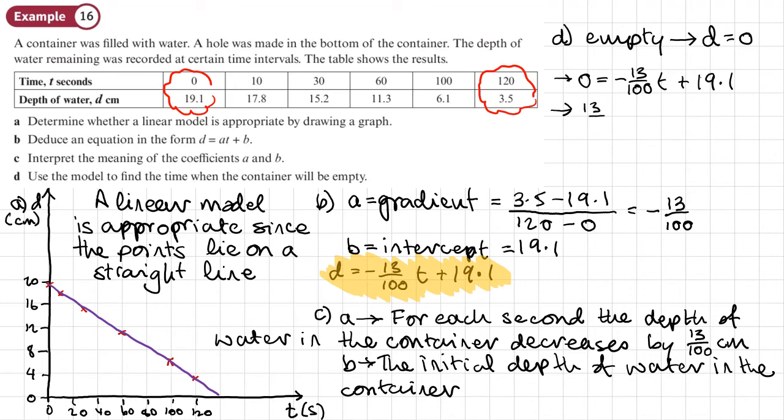So 13 over 100 T, if we move that to the other side, equals 19.1. So that will give us T equaling 19.1 divided by 13 over 100, let's call it 0.13 now. So what value of T do we get?